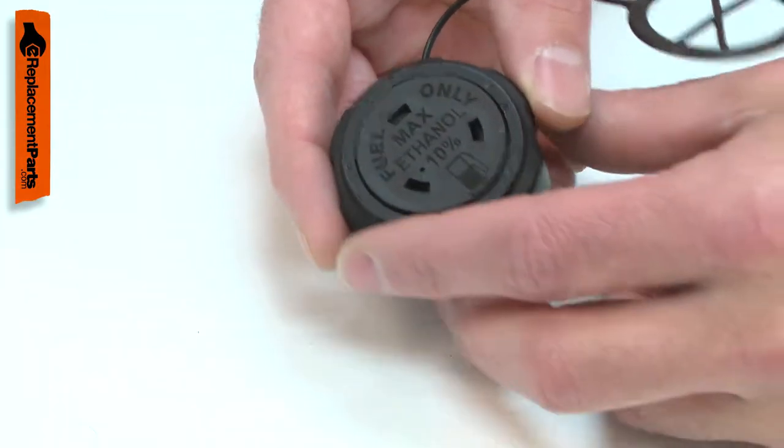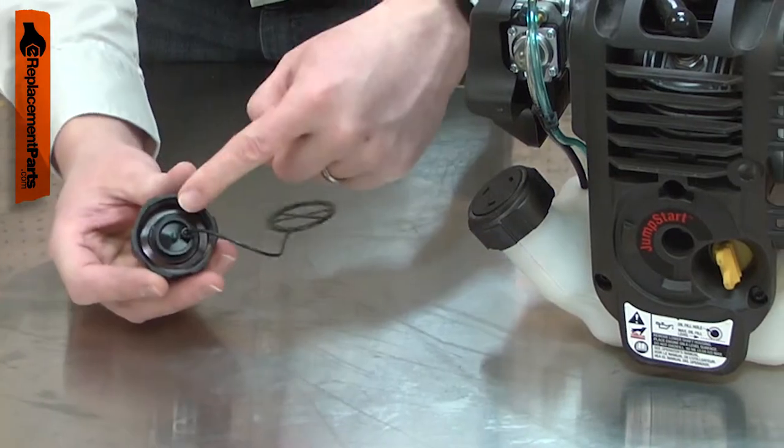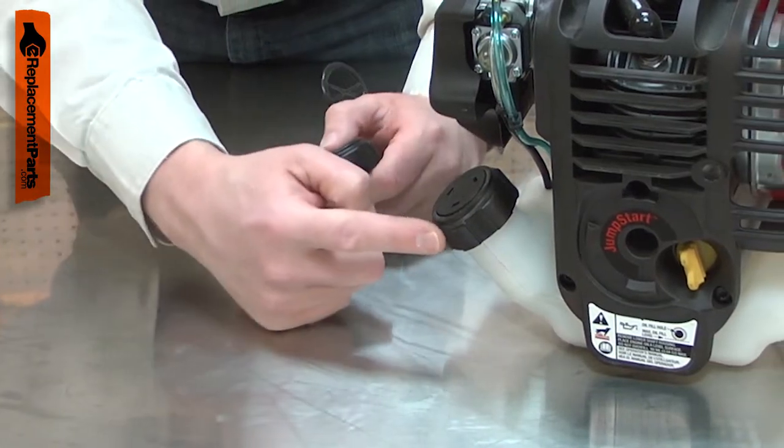There are a few problems that could be caused by the fuel cap. Leaking gas could be caused by a cracked or missing o-ring, or the cap itself is cracked.